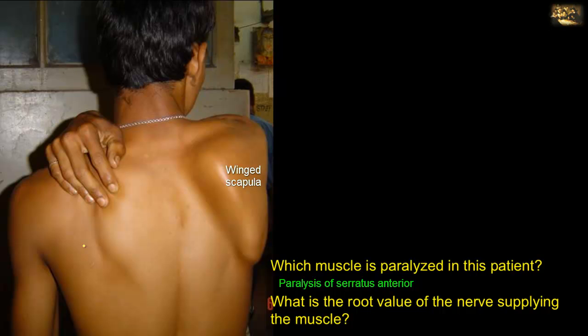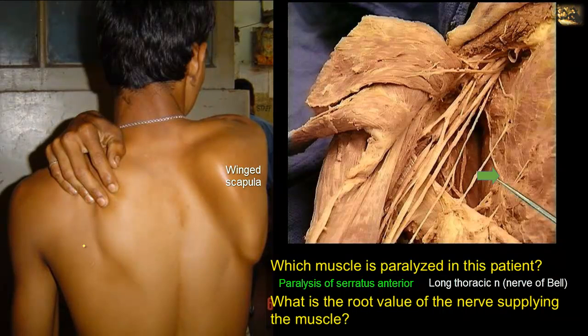The serratus anterior muscle is supplied by the long thoracic nerve, a supraclavicular branch of the brachial plexus arising from C5, C6, C7. The long thoracic nerve is also called the nerve of Bell, hence the mnemonic C5, C6, C7 — Bells of Heaven.